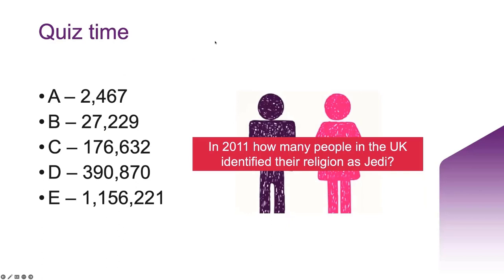We'll start with a little quiz — this is probably the last time I'll be able to use this one. I've been using this slide for roughly eight years and it refers back to the 2011 Census. Can you tell me: in 2011, how many people in the UK identified their religion as Jedi? In the 2011 Census Detailed Religion question, there were 176,632 people who identified as following the Jedi religion.